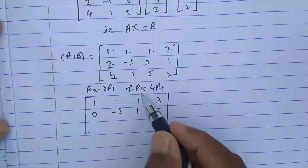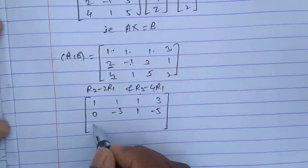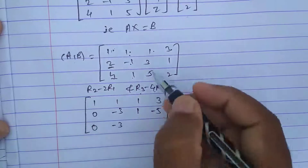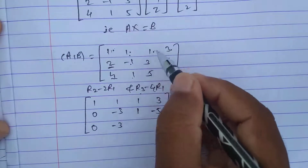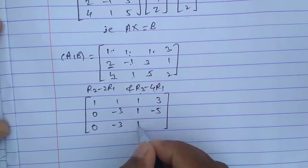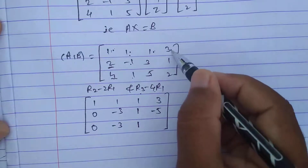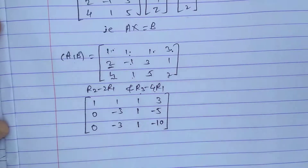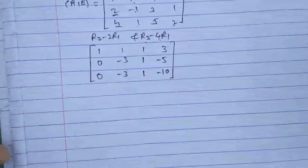For R3 minus 4 times R1: 4 minus 4 is 0, 1 minus 4 is minus 3, 5 minus 4 is 1, and 2 minus 12 is minus 10.